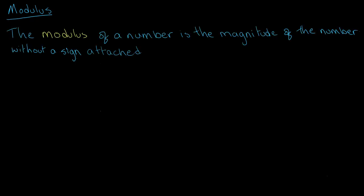In this video I will be talking about modulus and explaining how to solve questions involving modulus. The modulus of a number is the magnitude of that number without a sign attached, where sign refers to either the positive or negative sign. Modulus is denoted as two straight vertical lines on either side of a number.